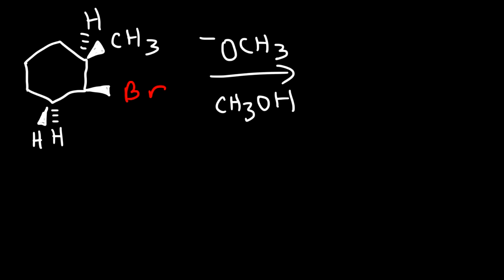It's important to understand that the methoxide ion has to grab the adjacent hydrogen that's opposite to the bromine atom. The bromine atom is on the wedge, so therefore we can only abstract a hydrogen that is on a dash. So therefore, we can get a mixture of two products — the double bond can form here or here.